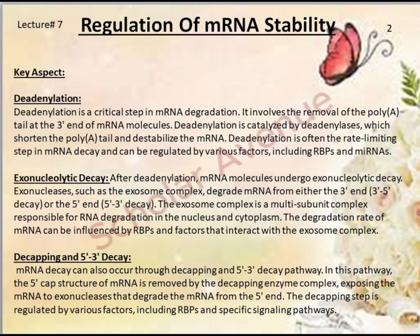Second is deadenylation. Deadenylation is a critical step in mRNA degradation involving the removal of the poly-A tail at the three-prime end of mRNA molecules. Deadenylation is catalyzed by deadenylases, which shorten the poly-A tail and destabilize the mRNA. It is often the rate-limiting step in mRNA decay and can be regulated by various factors including RBPs and miRNAs.